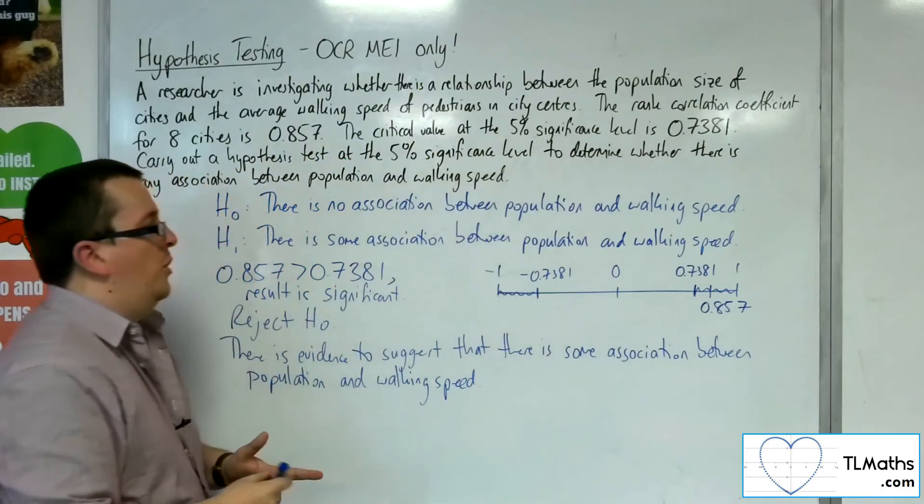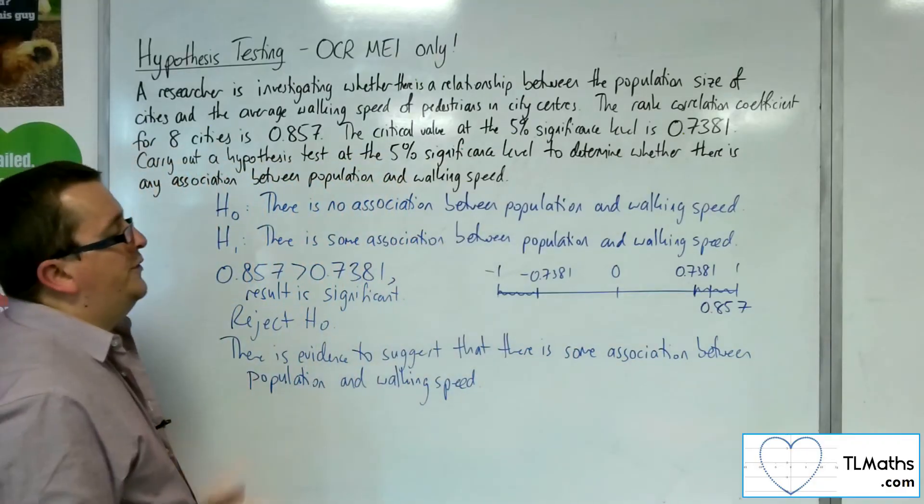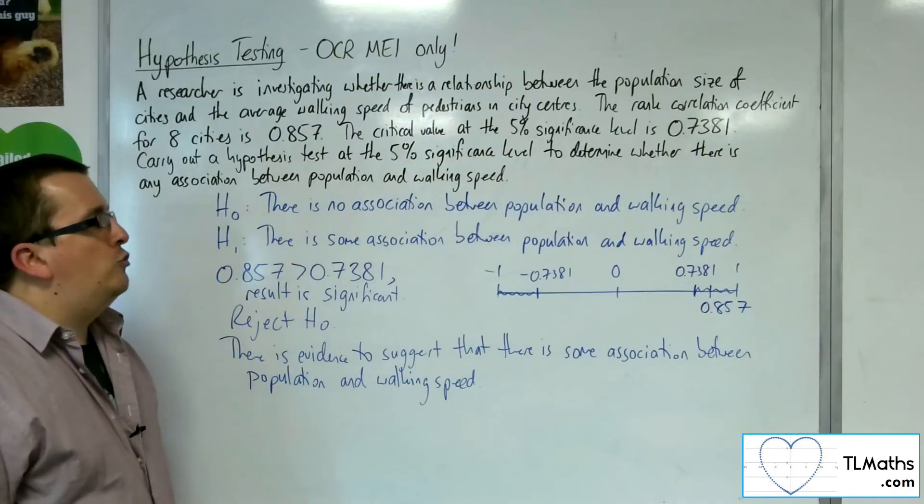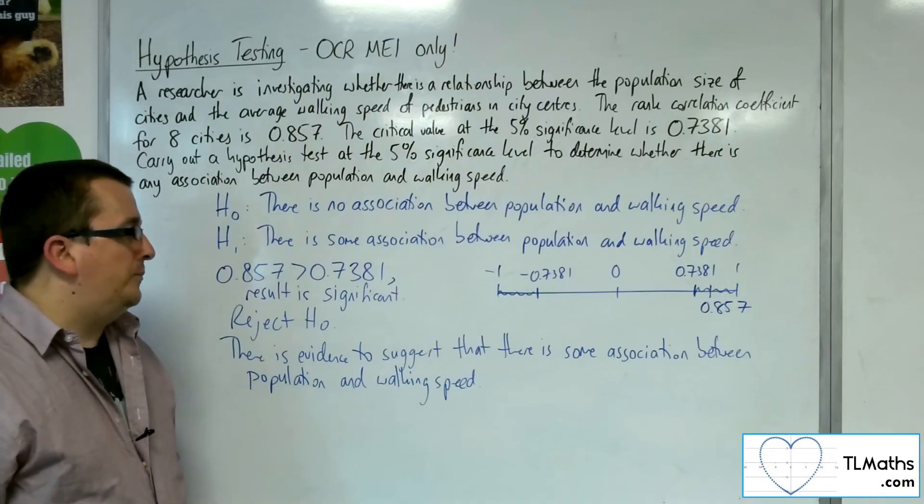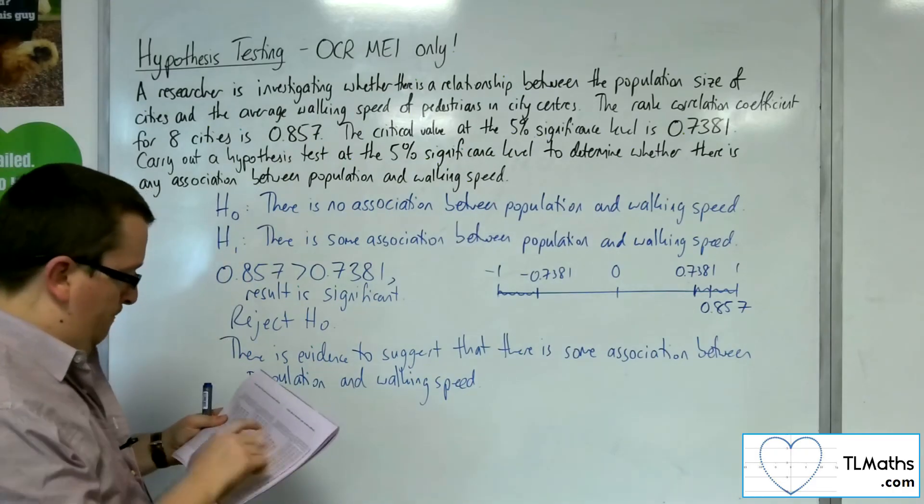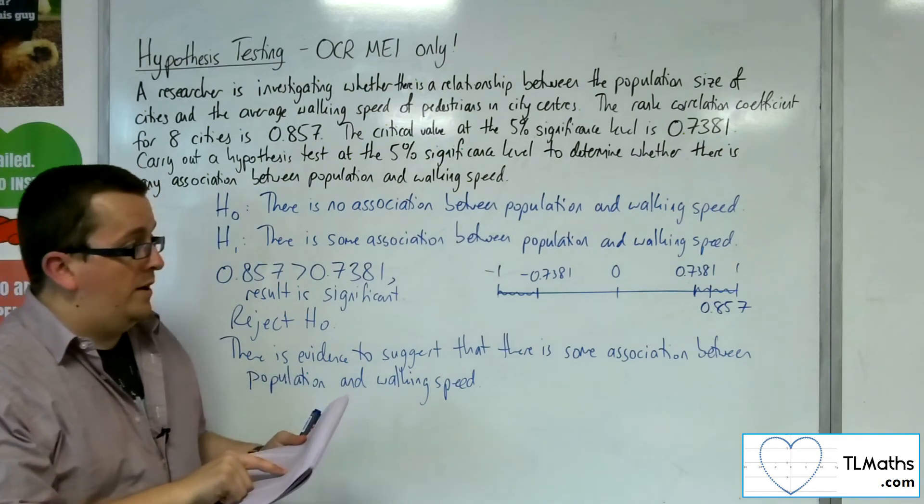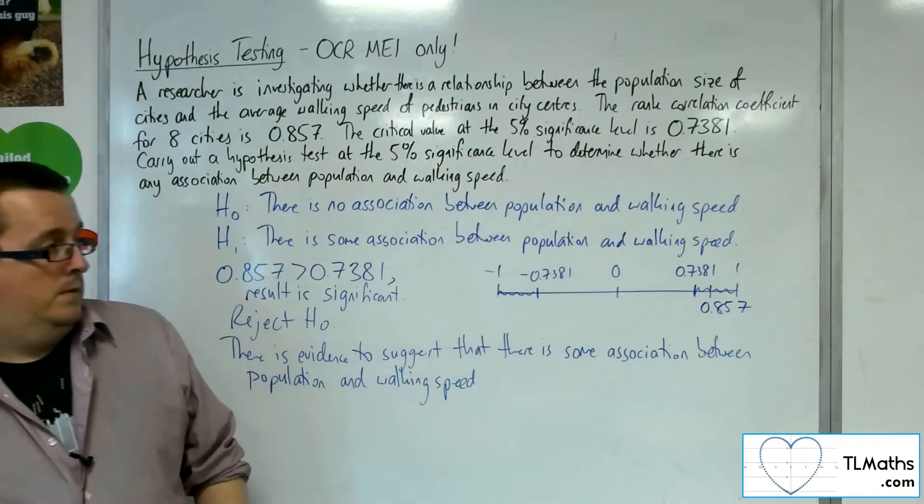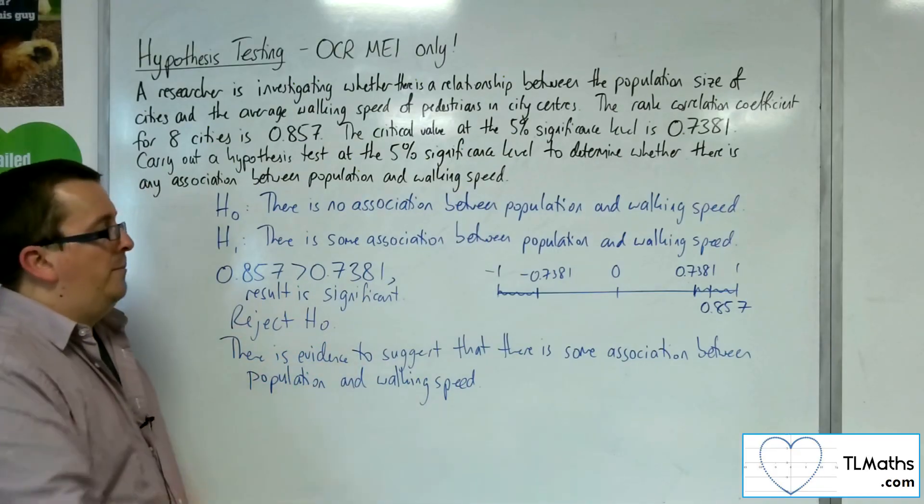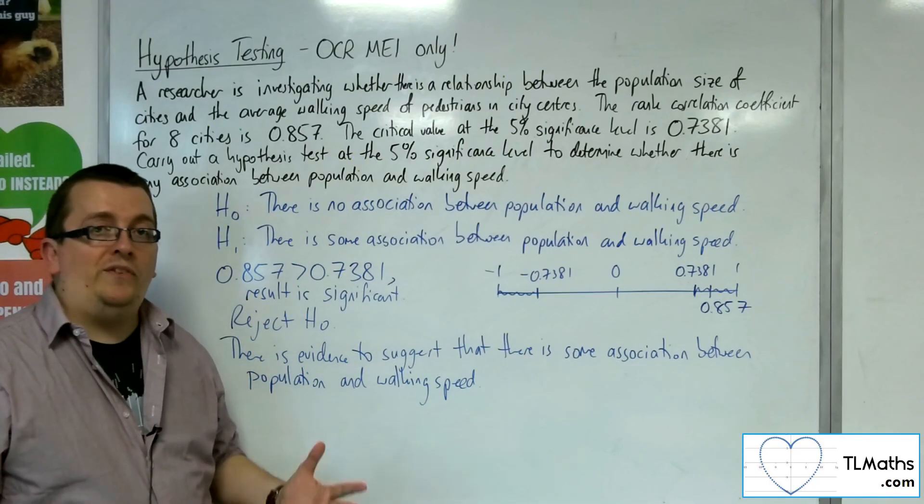Although 0.857 is clearly positive and we're looking at that upper end, we can't put 'positive association' into our concluding statement because we weren't testing for that. The critical value would have been different in that case. If we tested for positive association, we would have been looking at 0.6429 for 5%, which actually would have been a significant result as well. But that's not something we can conclude. We have to make a conclusion based on the alternative hypothesis that we set out initially.